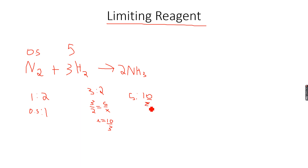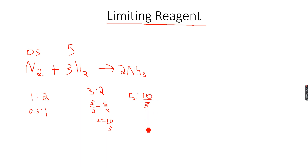Now we have a problem: using the ratio between nitrogen and ammonia we get 1 mole of ammonia, but using the ratio between hydrogen and ammonia we get 10/3 moles of ammonia. In both cases the moles of ammonia are not the same, so which answer is correct?